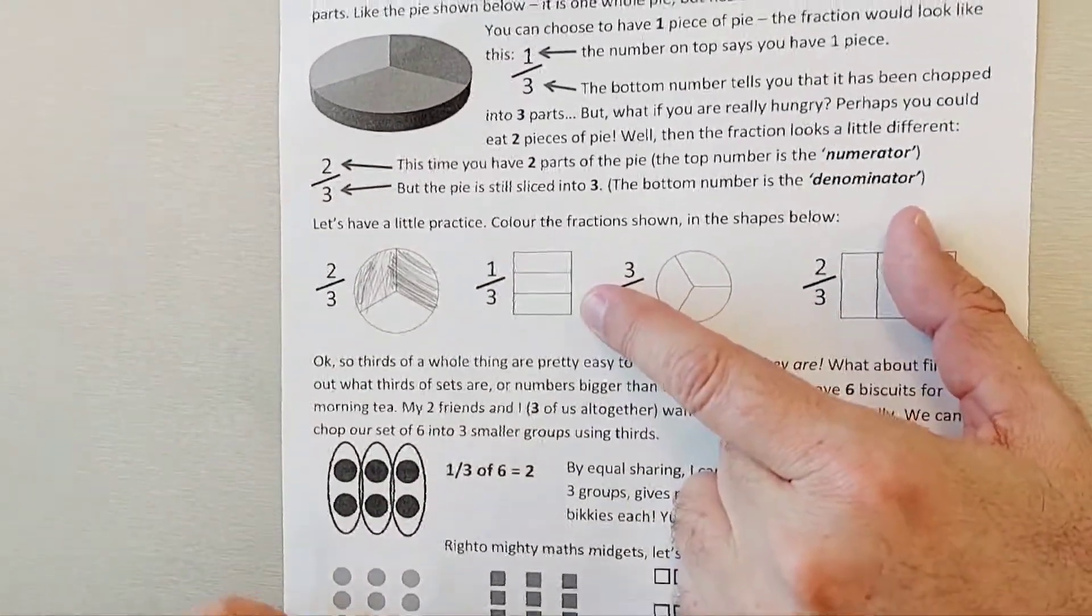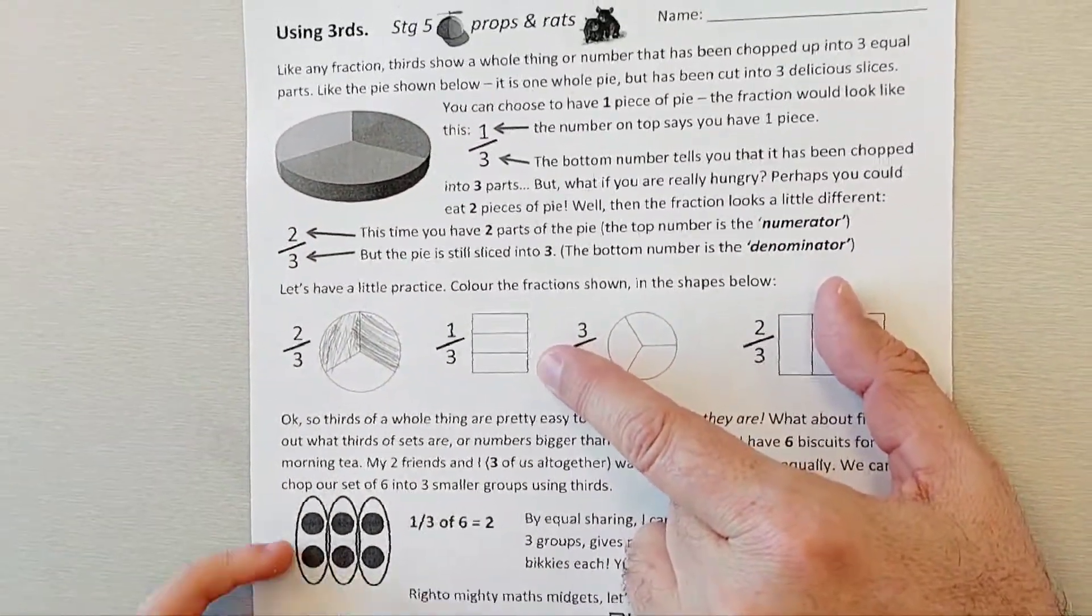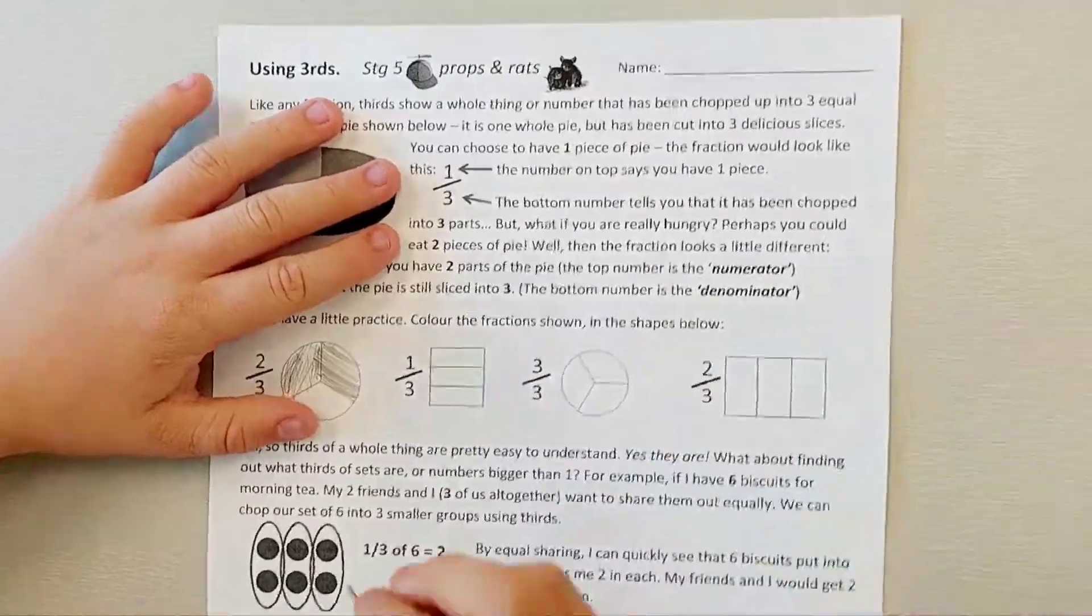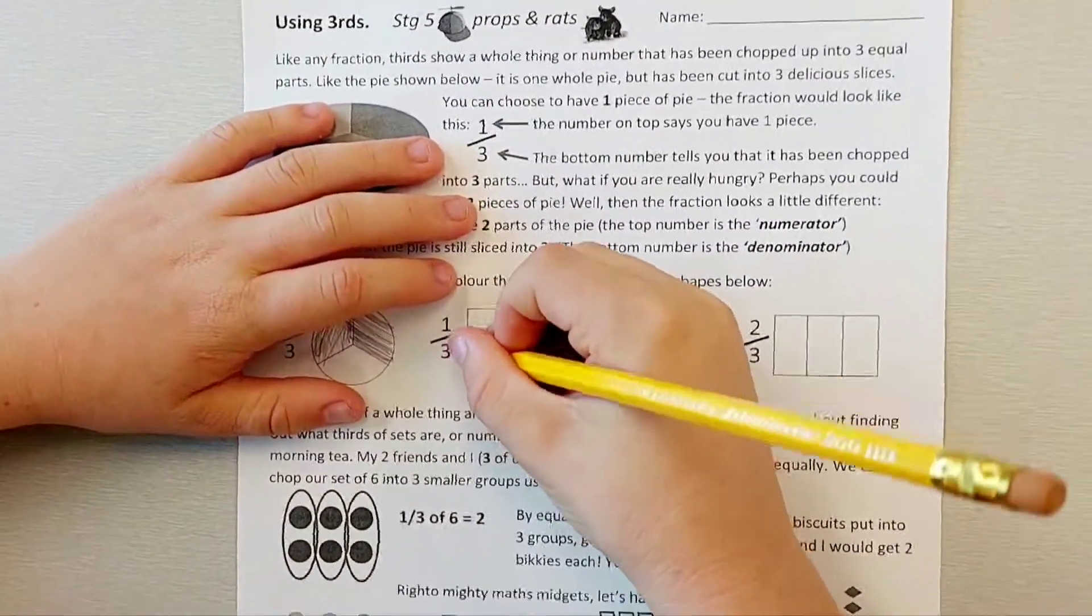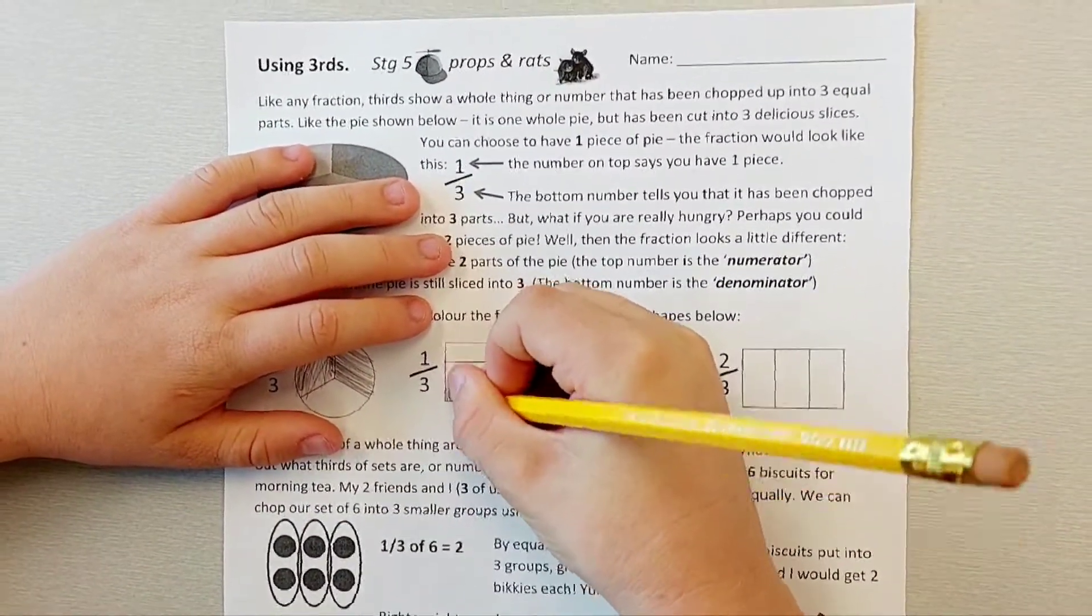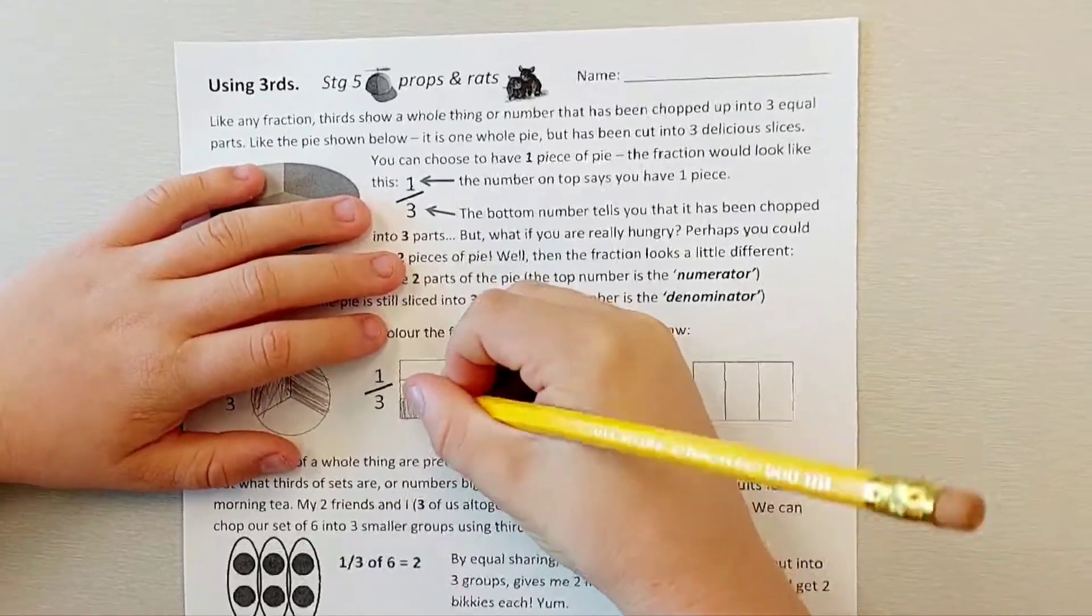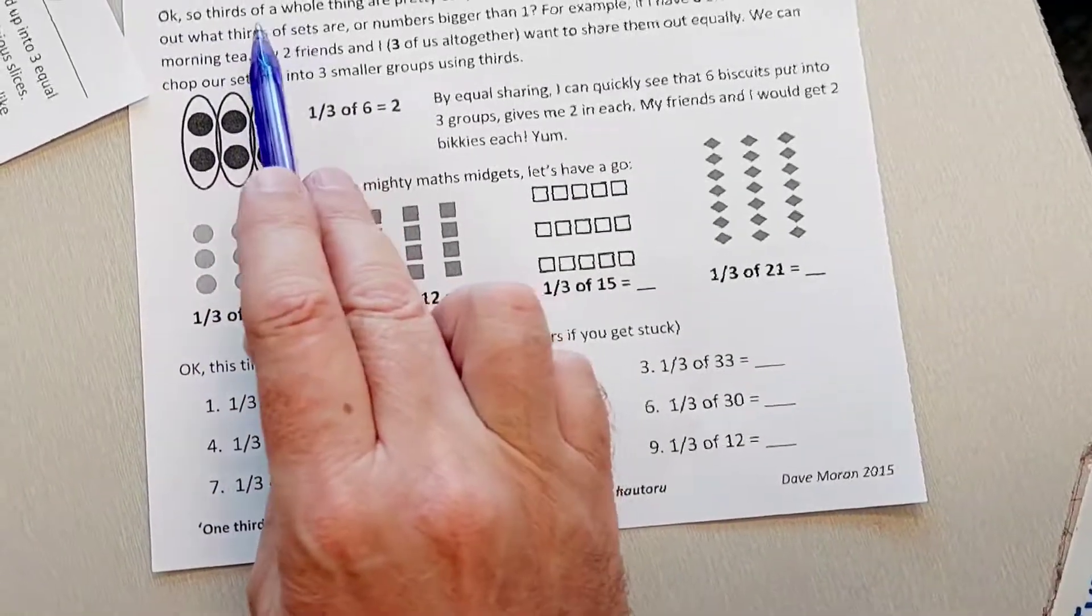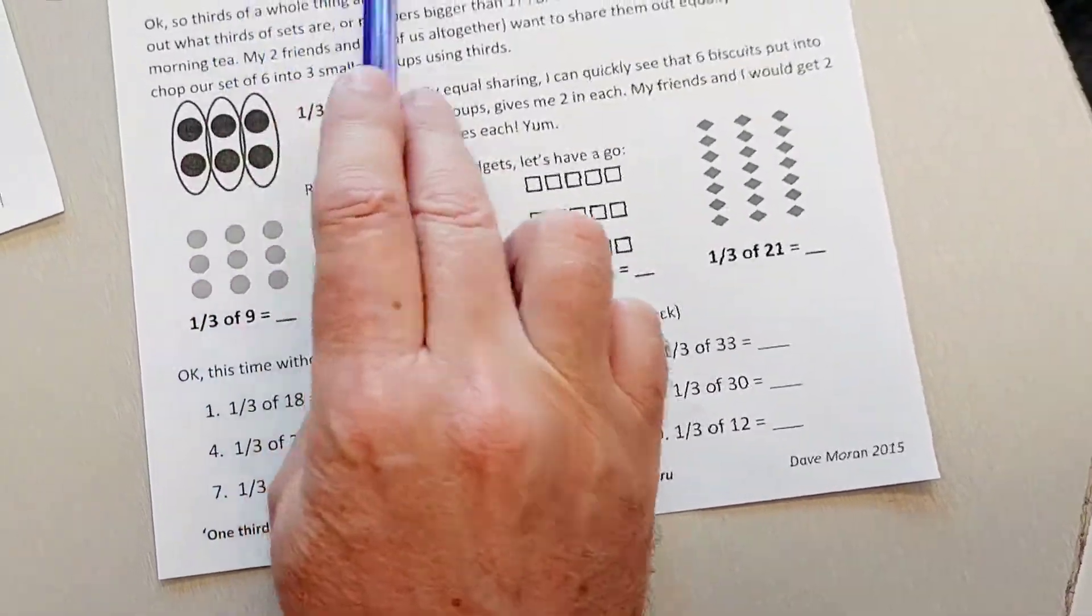Okay, and you've got a little box there and it's already been chopped into three. So what would one third of that box look like? Three, six, nine, twelve, three, eight, twelve. So thirds of a whole thing are pretty easy to understand, right?